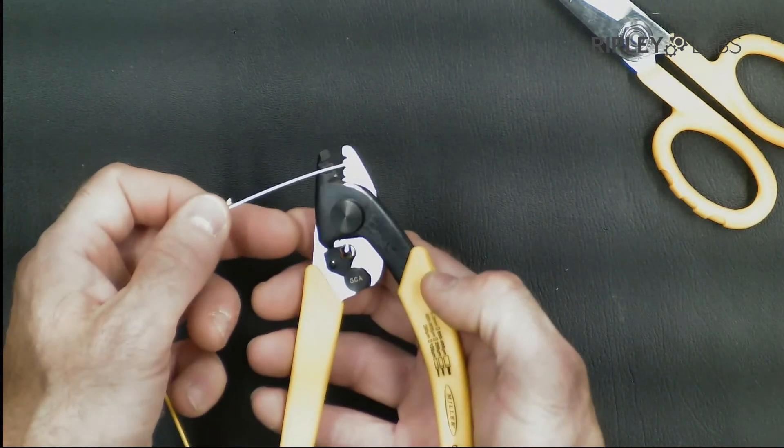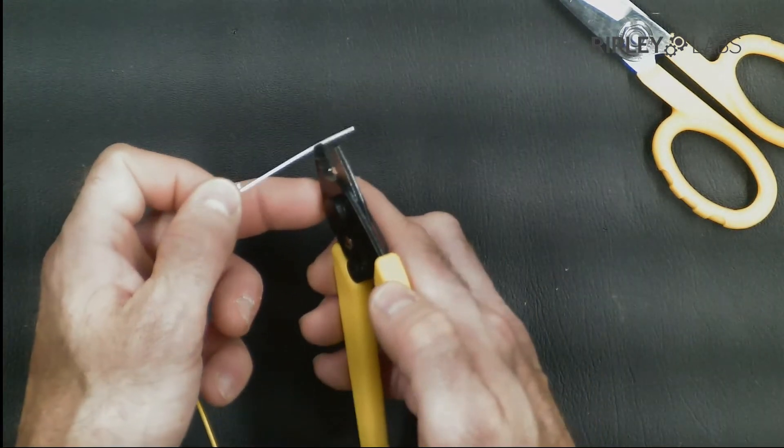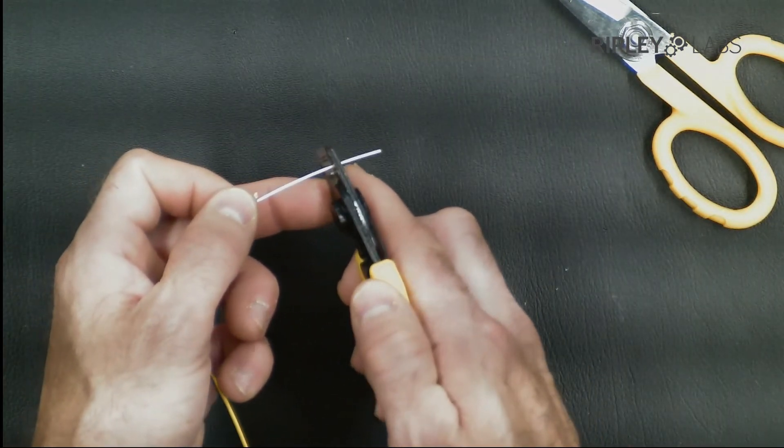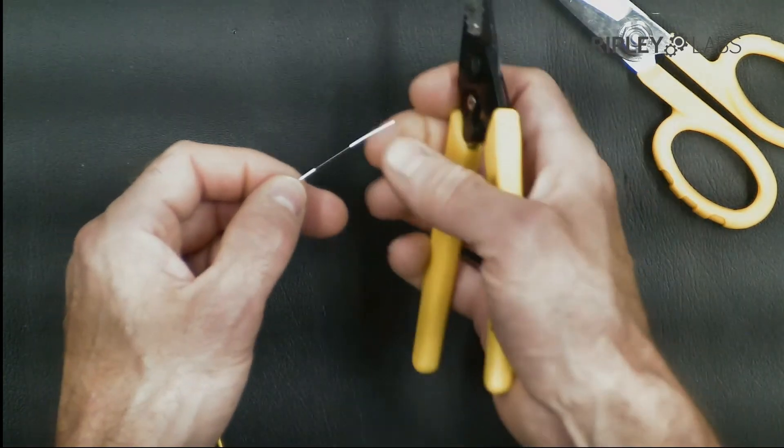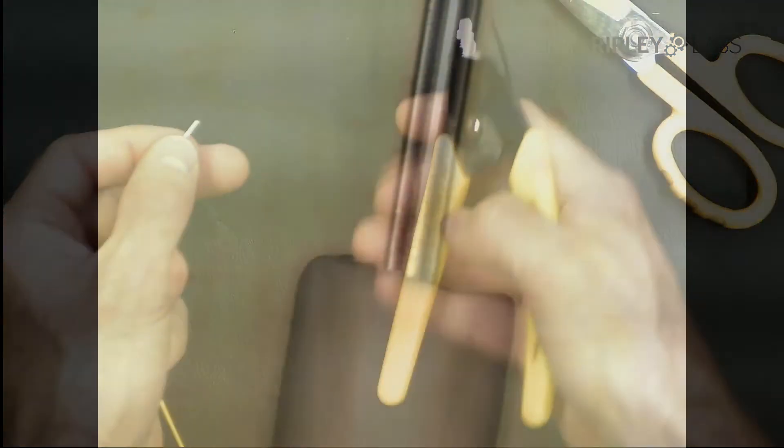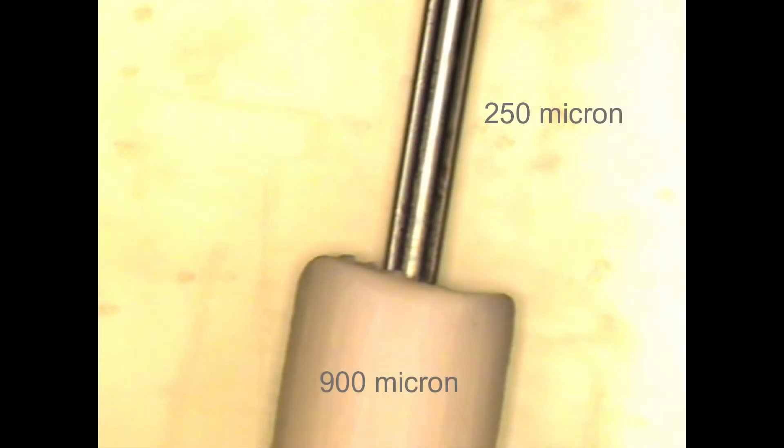Next place the 600 to 900 micron tight buffer into the second hole. Squeeze the jaws together tightly and push the tool away, and you'll remove the buffer tube coating cleanly. Notice the clean cut transitioning from the 900 to 250 micron.